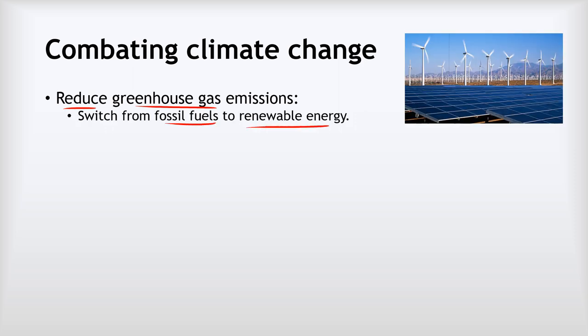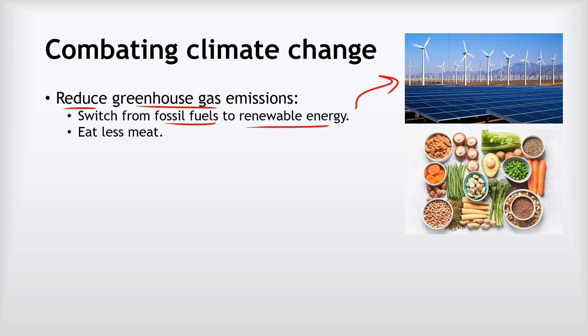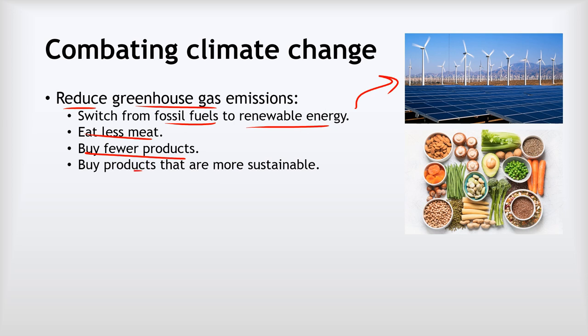We need to switch from fossil fuels to renewable energy — more solar power, wind power, and tidal power. This is already happening: it is now cheaper to build new renewable power in the UK and much of the world than a coal or gas power plant. Eating less meat is important — meat production generates far more greenhouse gas emissions than vegetables, and the climate cannot afford current levels of meat consumption. We should also buy fewer products, as many goods cause huge carbon dioxide emissions through their life cycles. If we do buy products, choose more sustainable ones with a lower climate impact.